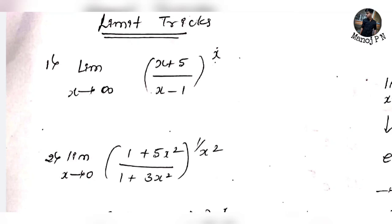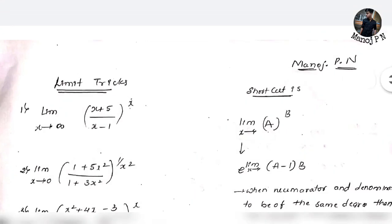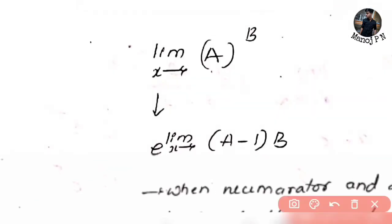You can apply the 1^∞ (infinity to infinity) form here. You can use a shortcut. The shortcut is: for a limit of the form [f(x)]^g(x) where x tends to anything — infinity, 0, 1, 2, 3 — you can write it as e raised to the power of the limit of (a minus 1) into b, which gives e to the power of b.